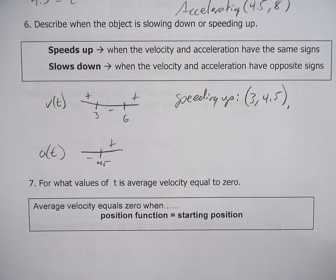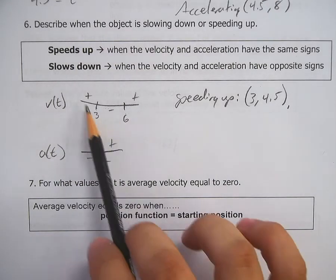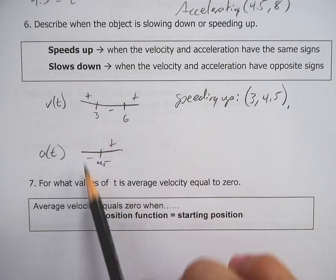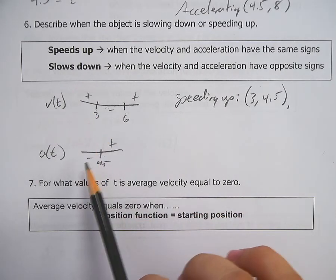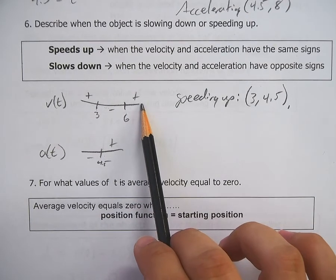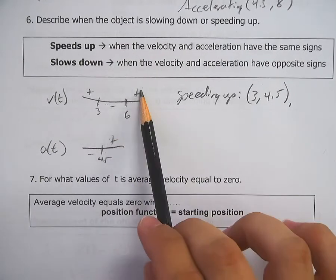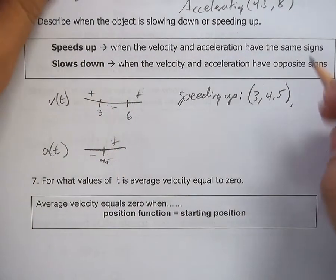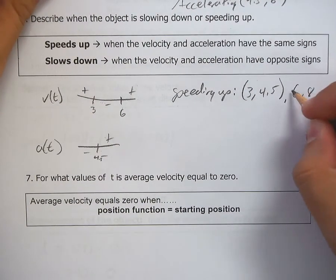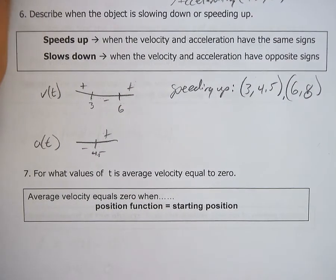All right. And then where else do they have the same sign? Where are they positive? Velocity is positive zero to three, but not for acceleration. Velocity is positive from six to eight. So it's positive in some of the same parts. How about six to eight? That includes acceleration as well. So six to eight.